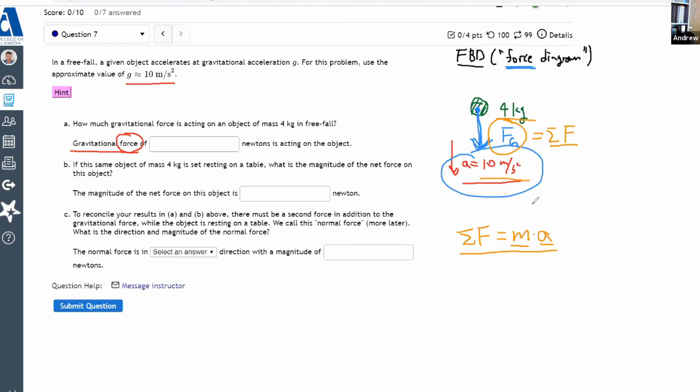So your net force there is 4 kilograms times 10 meters per second squared, or 40 kilograms times meter per second squared. Now, if you go through the units, then you know that kilogram times meter per second squared is Newton. So net force is 40 Newtons. So that should be the answer. Let me just plug that in, demonstrate that that is the answer. And then keep going.